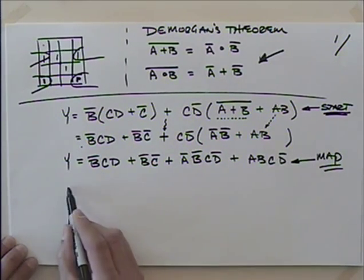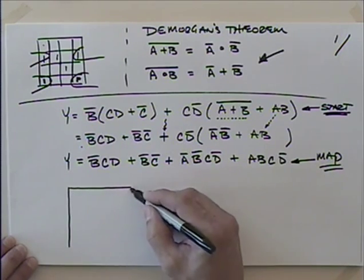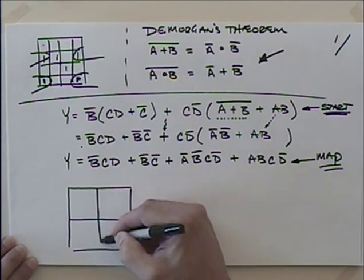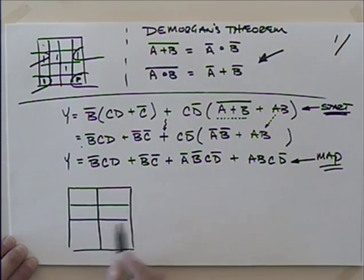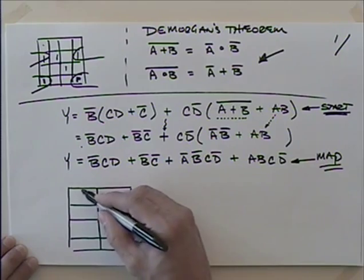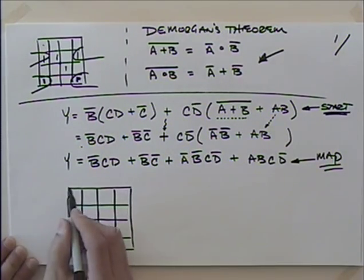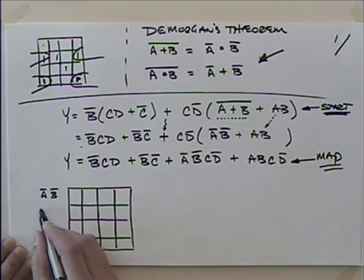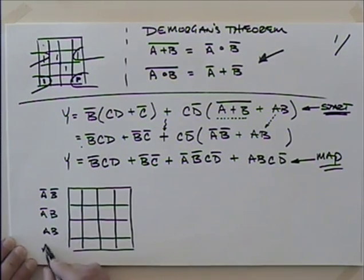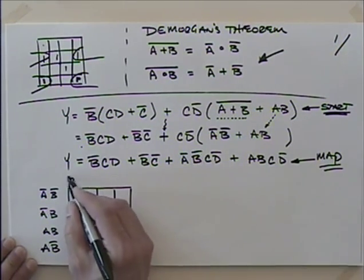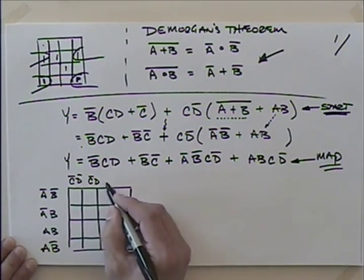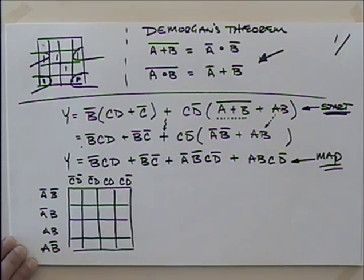I'll draw the Karnaugh maps exactly like I've always done in the past, and I'd encourage you to keep track of that order. So we had not-A not-B, not-A B, A B, and A not-B across the top. And we had not-C not-D, not-C D, C D, and C not-D down the side.